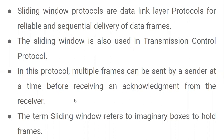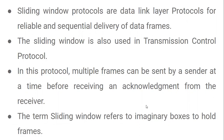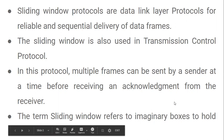In this protocol, without getting any acknowledgement from the receiver side, the sender keeps on sending n number of frames to the receiver. The term sliding window refers to an imaginary box to hold the frames — like an array of size 5 with boxes numbered 0, 1, 2, 3, 4. These boxes are called imaginary boxes to hold those particular frames.